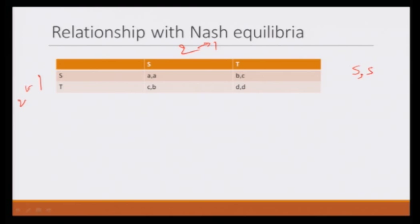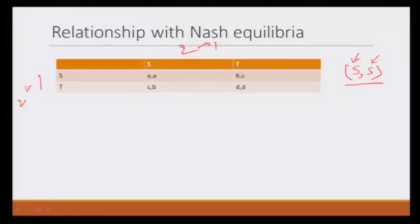If (S, S) is a Nash equilibrium, then the condition required is that player 1's best response is S, given player 2 is playing S. This means player 1 would not like to deviate — would not like to change his strategy — given the other player is playing S. When, by changing his strategy, he does not expect to gain anything. Given that the other player is playing S, player 1 can either play S or play T. He can deviate from S to T, but this deviation is not a good idea when A is greater than or equal to C. So player 1 would not deviate when A ≥ C.